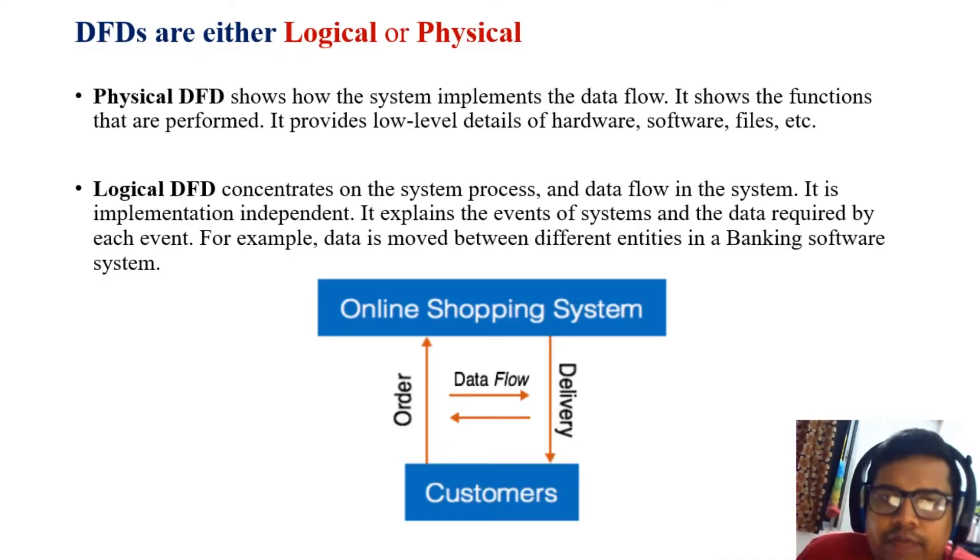Two types of data flow diagrams exist: logical and physical. The physical DFD shows how the system implements data flow. It shows the functions that are performed for implementing data flow and provides low-level details of the software and hardware, files, etc., engaged in the implementation of data flow.